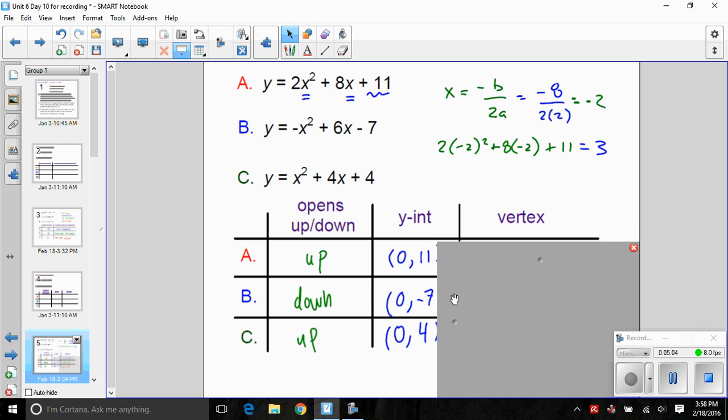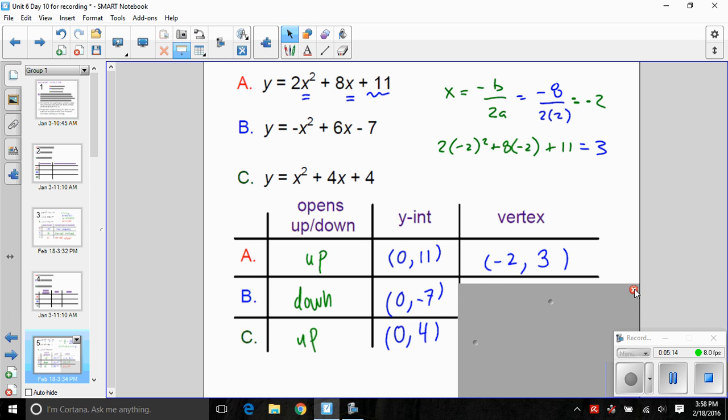It looks like the vertex for equation A is negative 2 comma 3. We can do the same process then for equation B and equation C and generate those vertex coordinates as well. Equation B has vertex 3 comma 2, and equation C has vertex negative 2 comma 0.